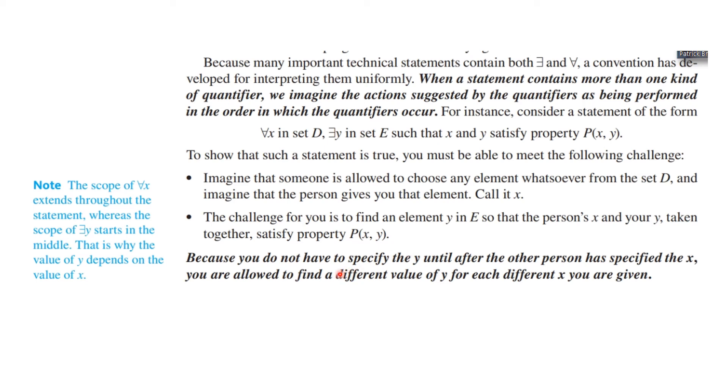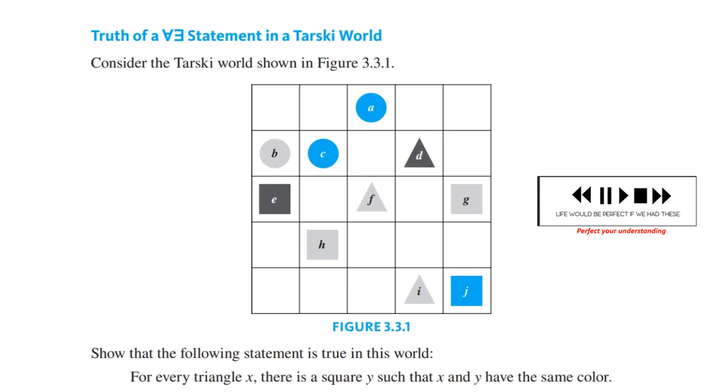Because you do not have to specify the value of y until after the person has given you x, you are allowed to find a different value of y for each x you are given. Note that means the scope of for every extends throughout the statement whereas the scope of there exists a y starts in the middle. That is why the value of y depends on the value of x.